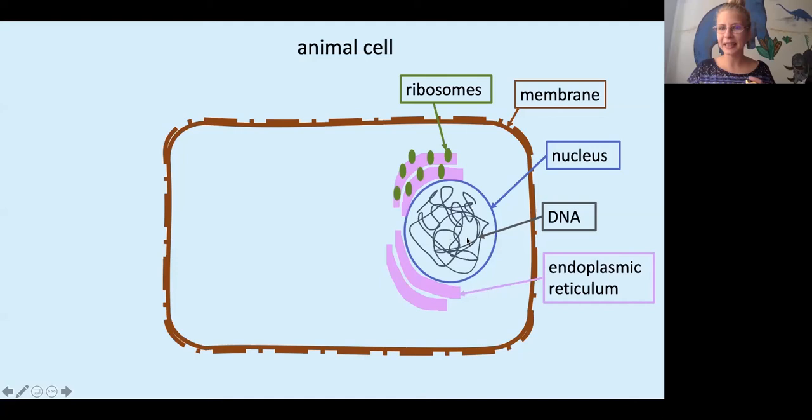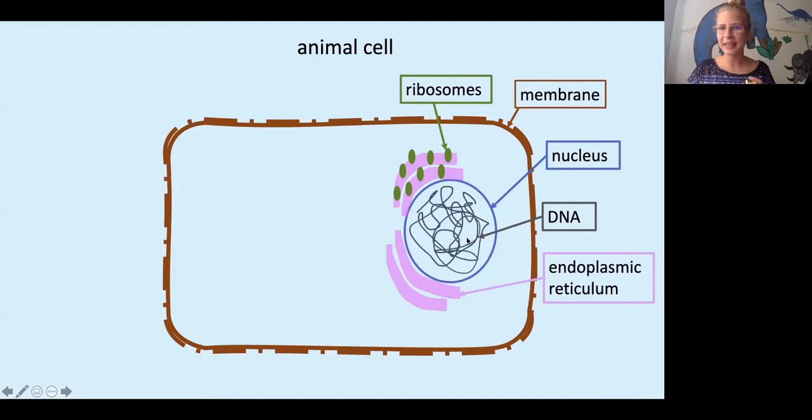So we have our nucleus with DNA and we have the endoplasmic reticulum and ribosomes, so some other parts of the cell. So here we have our animal cell - this is not all the parts in the animal cell, but here's just some. For a virus to reproduce, it needs this cell.